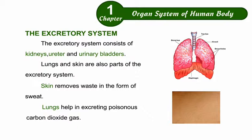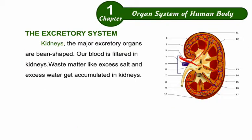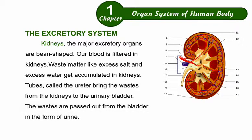Lungs help in excreting poisonous carbon dioxide gas. The kidneys are the major excretory organs. Our blood is filtered in the kidneys, where waste matter like excess salt and excess water get accumulated. Tubes called the ureter bring the waste from the kidneys to the urinary bladder.